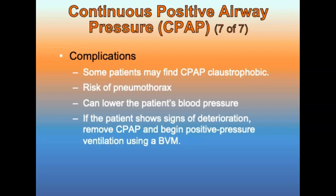Complications: some patients may find CPAP claustrophobic and resist application of the mask. Due to the high volume of pressure generated, pneumothorax is a risk, and high pressure in the chest can lower the patient's blood pressure. If a patient shows signs of deterioration, remove the CPAP and begin positive pressure ventilation with the BVM attached to high-flow oxygen.